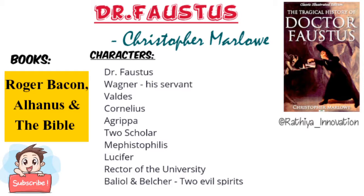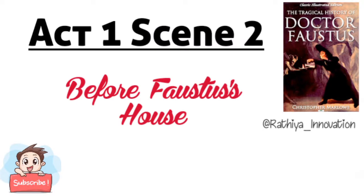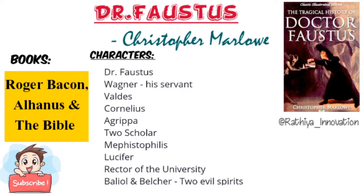Thus the very first scene ends with Faustus's curiosity and wish to study black magic. The second scene opens with the conversation of two scholars who are friendly to Faustus. They are coming to Wittenberg and standing in front of the house of Doctor Faustus. They feel something suspicious about Faustus, so they come to Wittenberg and want to meet him. Just then, Wagner — the servant of Faustus — arrives on the scene, and the two scholars begin to inquire about Faustus and the whereabouts of their master.